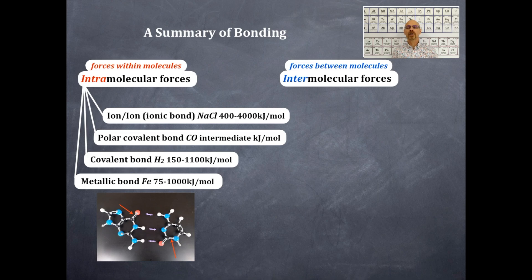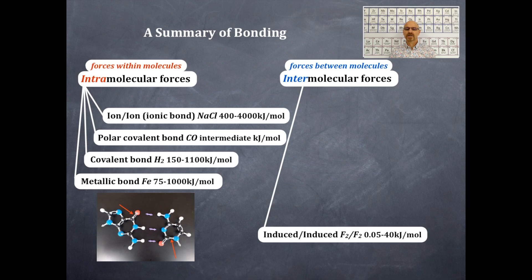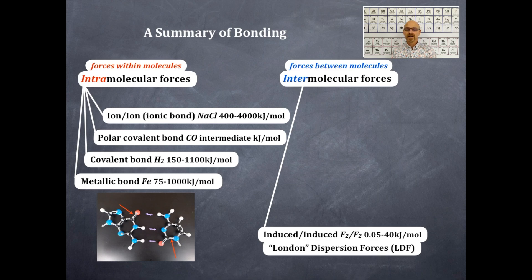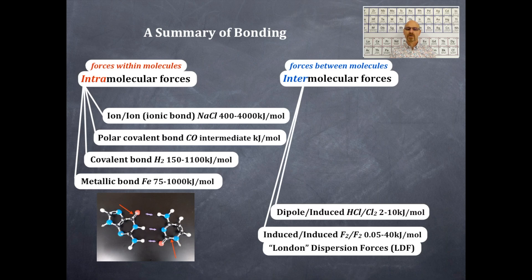We're gonna focus on intermolecular forces for the remaining portion of this unit. An example of an intermolecular force is an induced-induced dipole, and that would be with two nonpolar molecules like fluorine and fluorine, with a bond energy of 0.05 to 40 kilojoules per mole. Notice that this is much less than any of the intramolecular forces. This is otherwise known as a London dispersion force, or LDF. The next one is a dipole-induced dipole intermolecular force — a good example of that would be hydrochloric acid and chlorine — and that is between 2 and 10 kilojoules per mole.